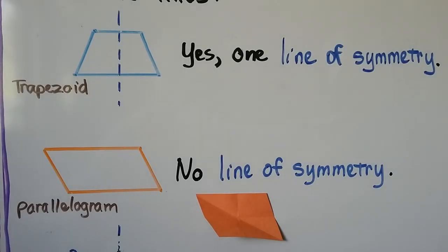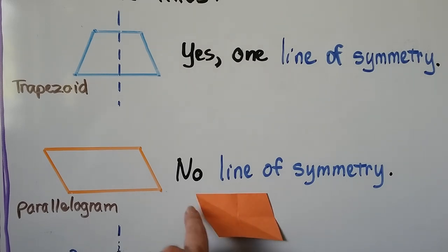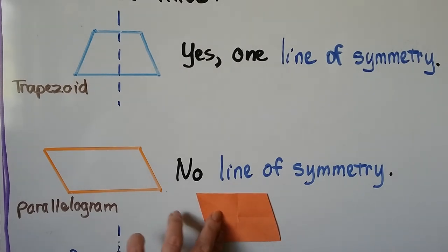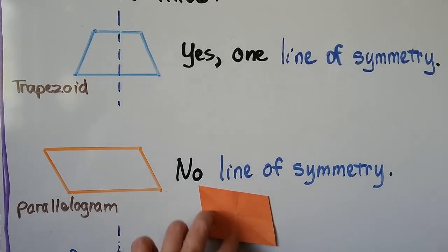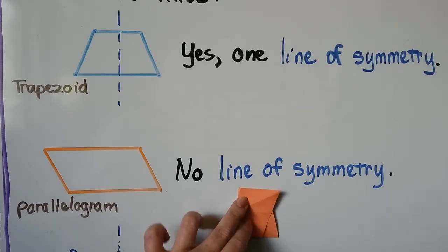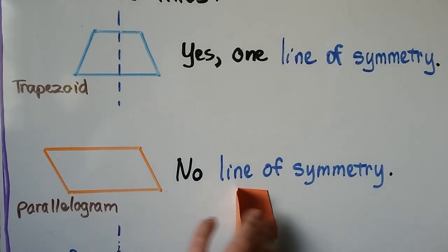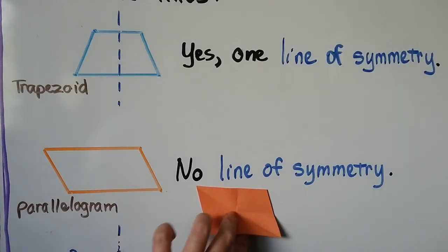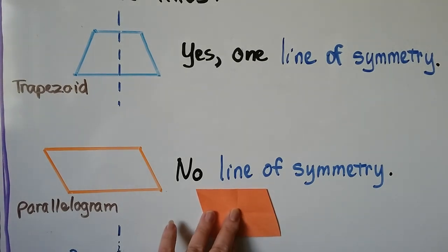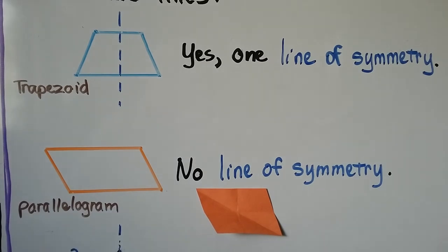For this parallelogram there's no line of symmetry. If we use my construction paper model here and we try folding it along its diagonal, it does not coincide with itself. And if we try folding it vertically as a line of symmetry, it does not coincide with itself. And even if we did it horizontally and folded it up this way, it does not coincide with itself. So there's no line of symmetry for that parallelogram.